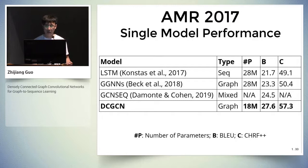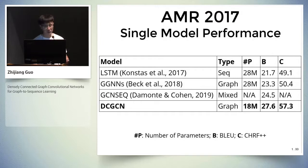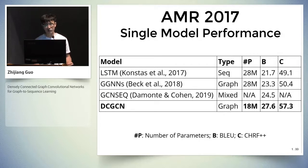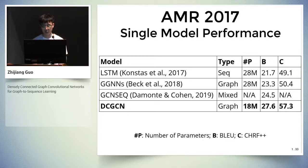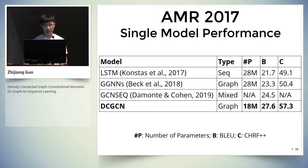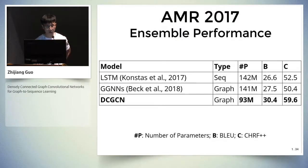Our proposed model trained with 0.3 million external training data achieves competitive results compared to models trained with 2 million external instances, and our ensemble model achieves new state-of-the-art results on this dataset. For the AMR-2017 dataset, we compare our single model with sequence encoder, recurrent graph encoder, and mix encoders. Our proposed model not only achieves higher BLEU and CHRF++ scores, but also has far fewer parameters. For ensemble performance, we have similar observations.